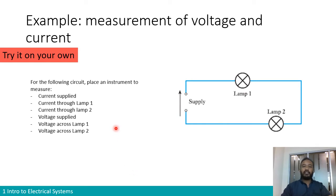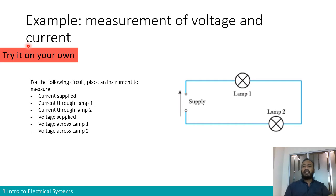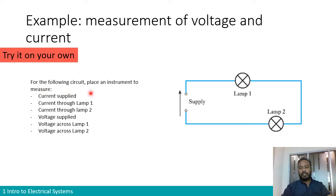Here we have an example to train you on identifying how to measure voltage and current. This helps you better understand the definitions. Current is the flow rate of charges, so you need to be inside — in series. If measuring potential difference, it is the difference of energy between two points, so you need to be outside the circuit, measured in parallel.